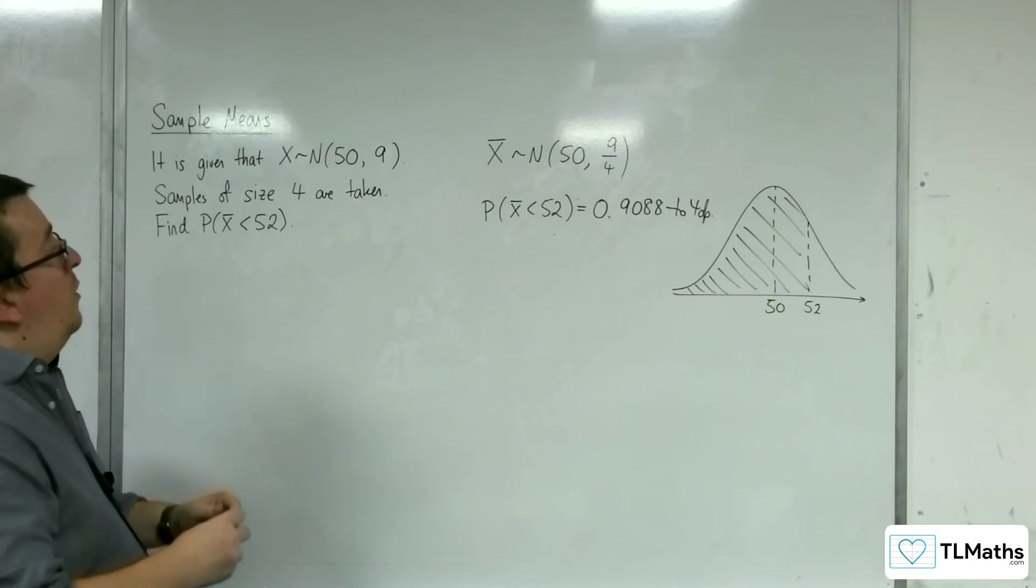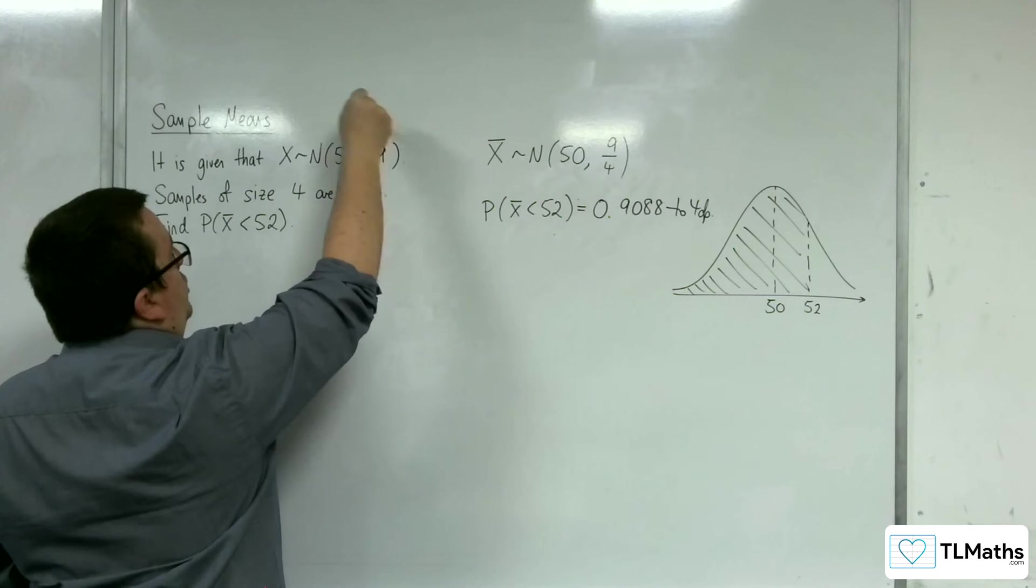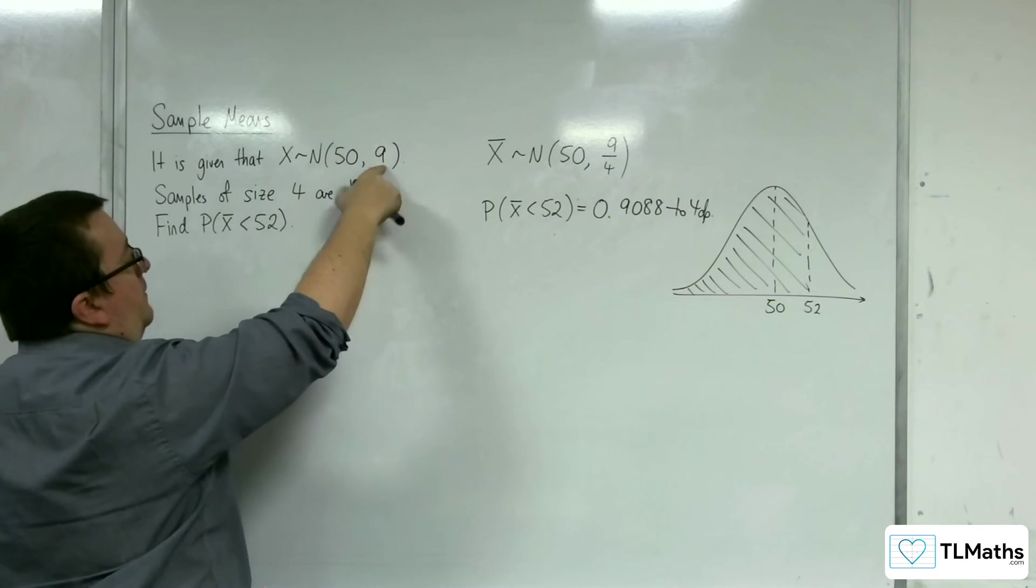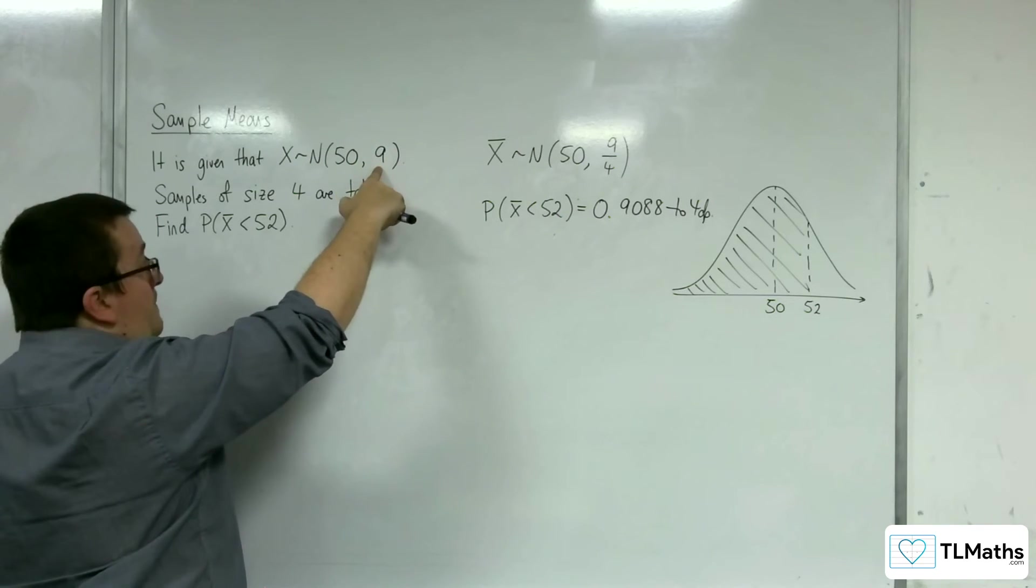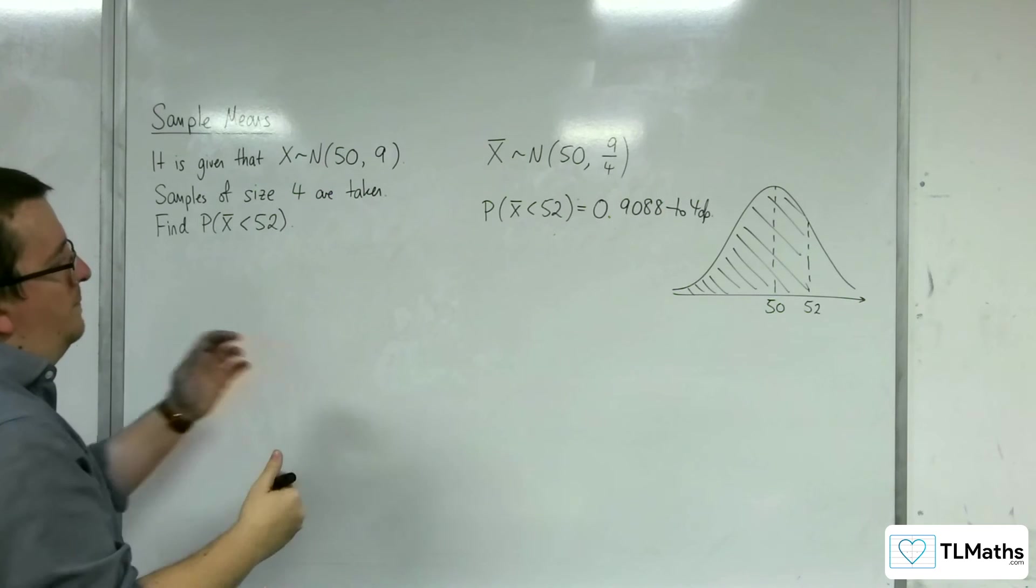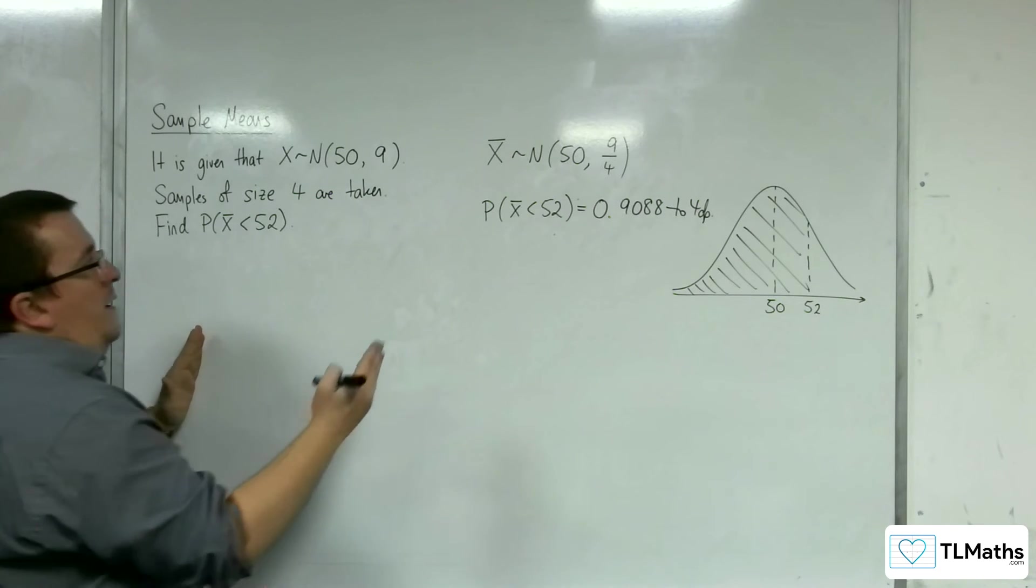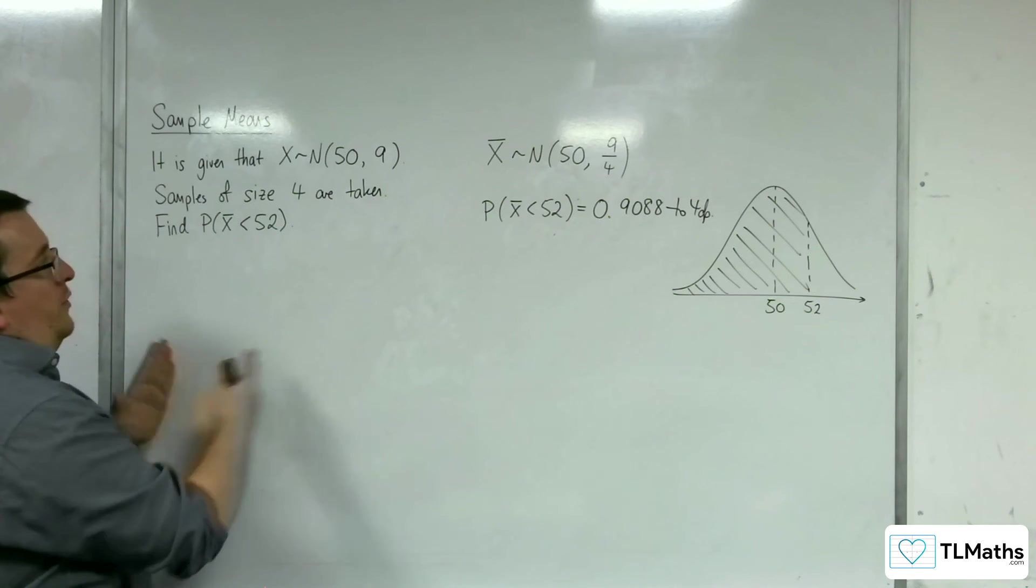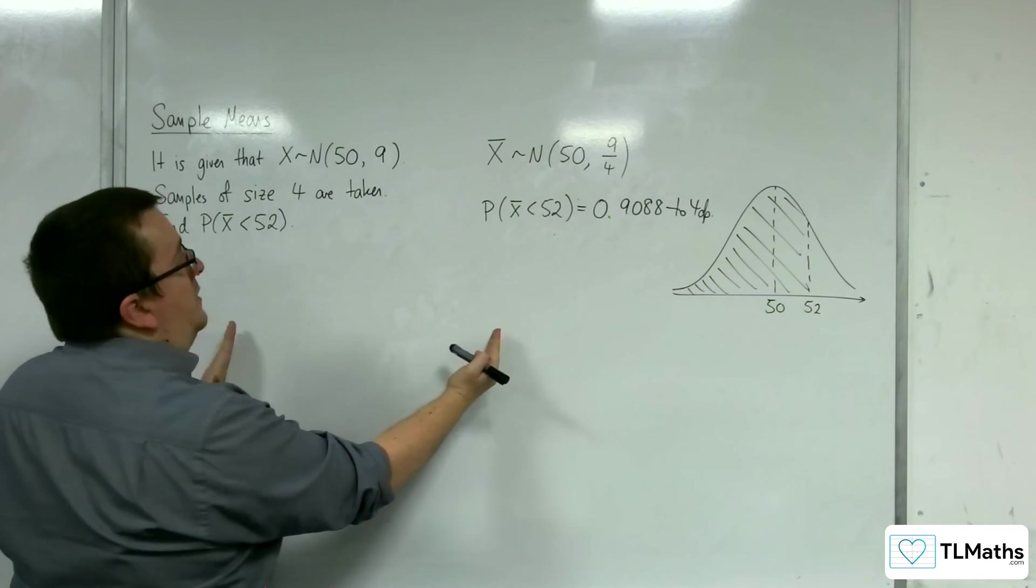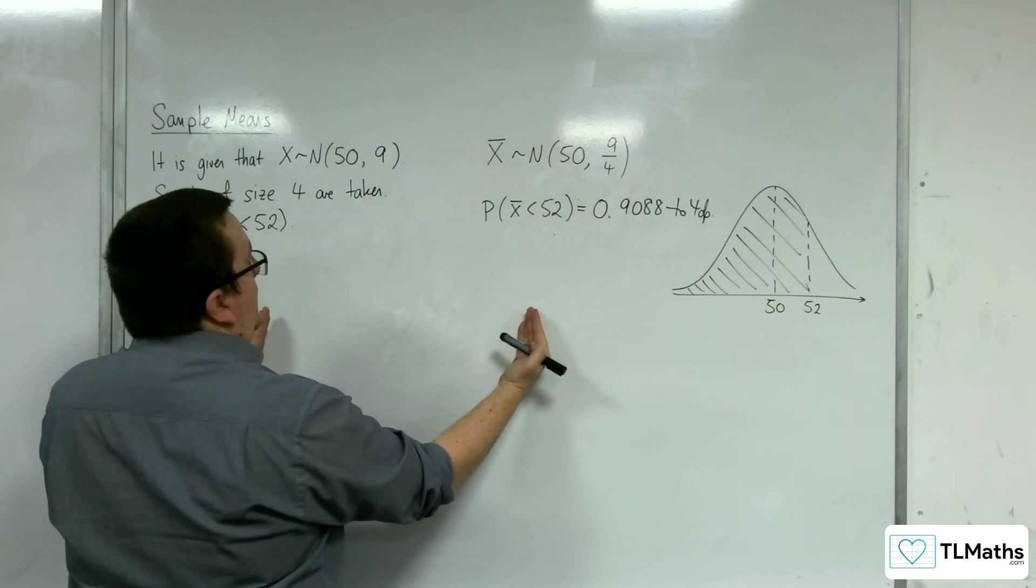The reason why I'm saying that is because the original population has a standard deviation of 3. So the majority of data will be between 41 and 59. So 3 standard deviations either side. So minus 41, sorry, 41 and 59.